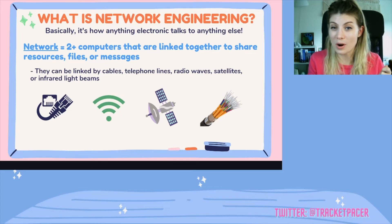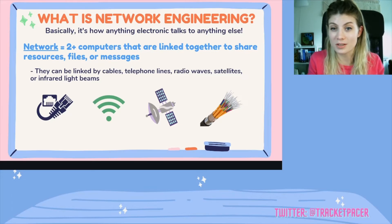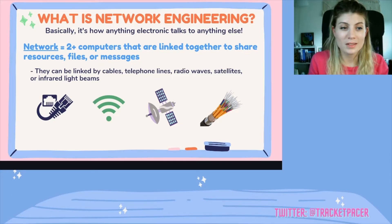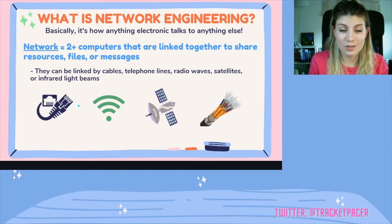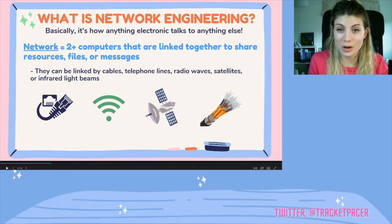These ethernet cables have copper wires inside of them, and data is passed through by sending electronic pulses along those copper wires. The next symbol is probably pretty familiar to you as well — it's the symbol for wireless internet or Wi-Fi. Wi-Fi sends data over radio waves instead of copper cabling. Satellites do the same thing; they send data over radio waves, but they're just higher up in the sky.